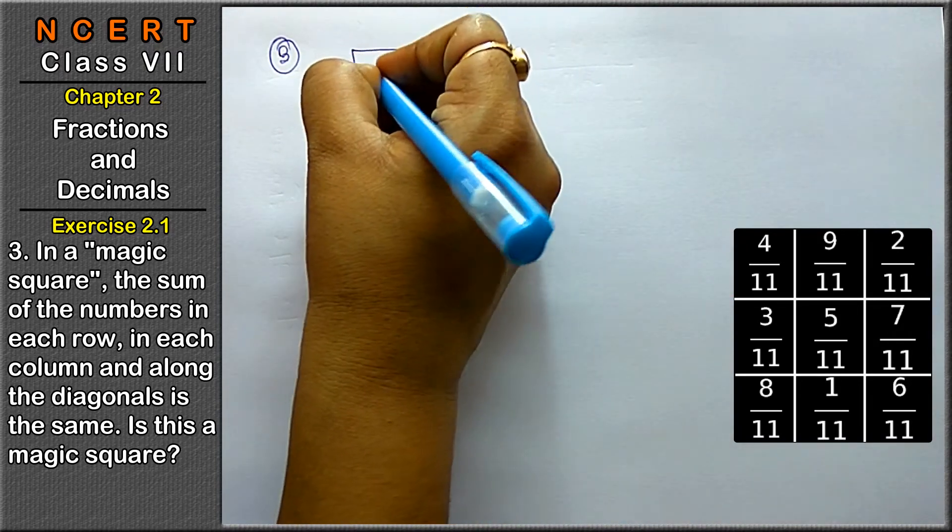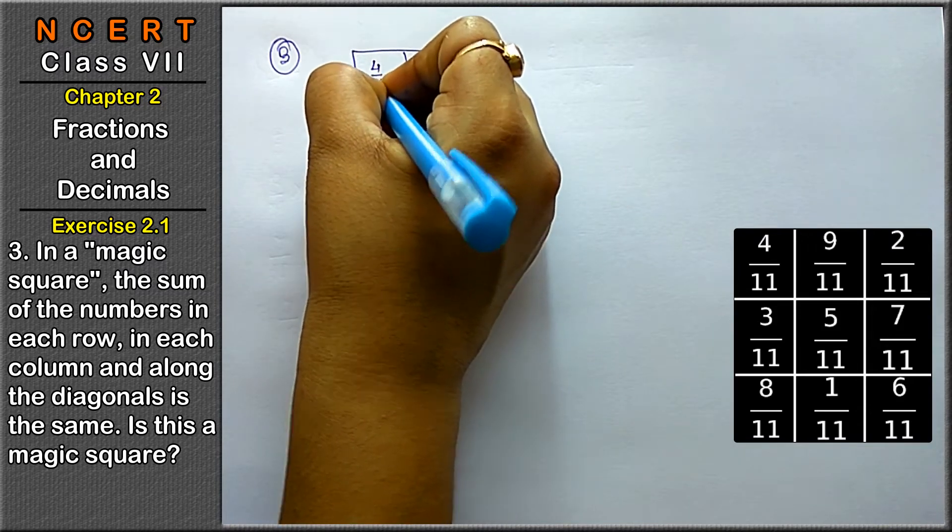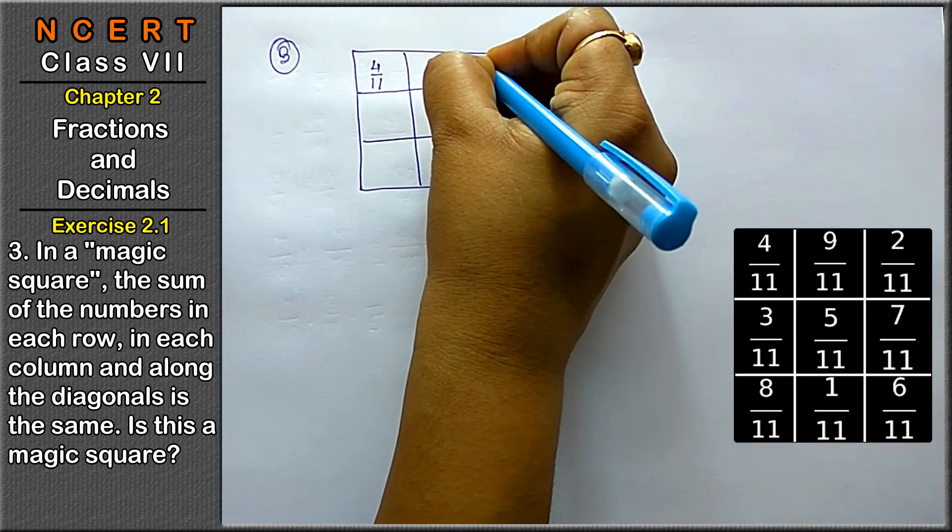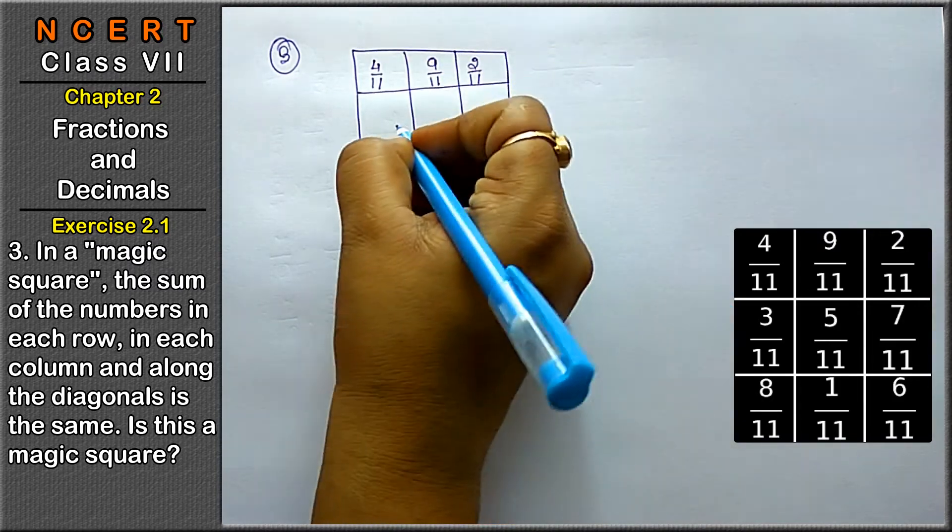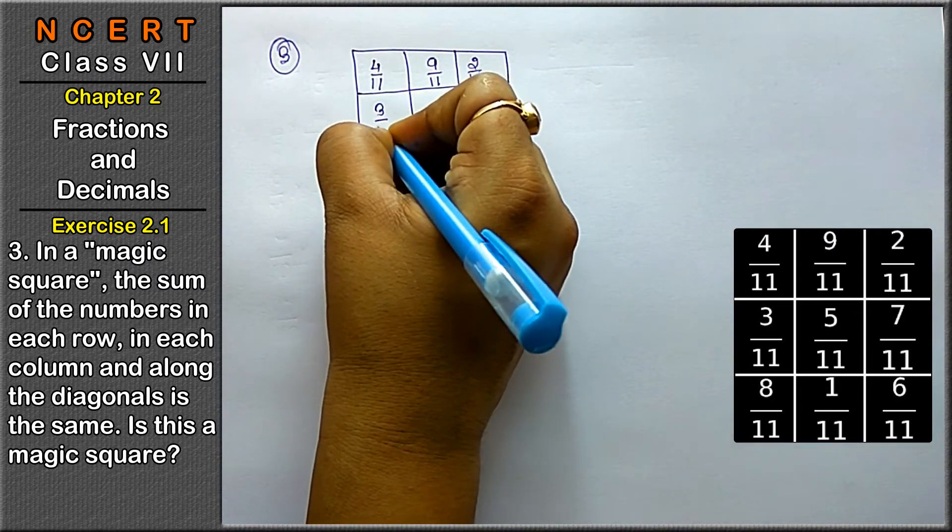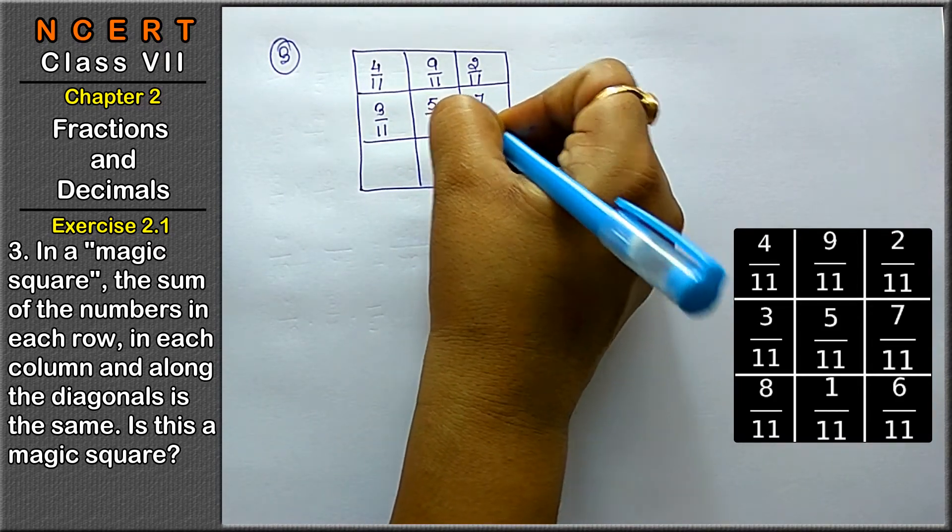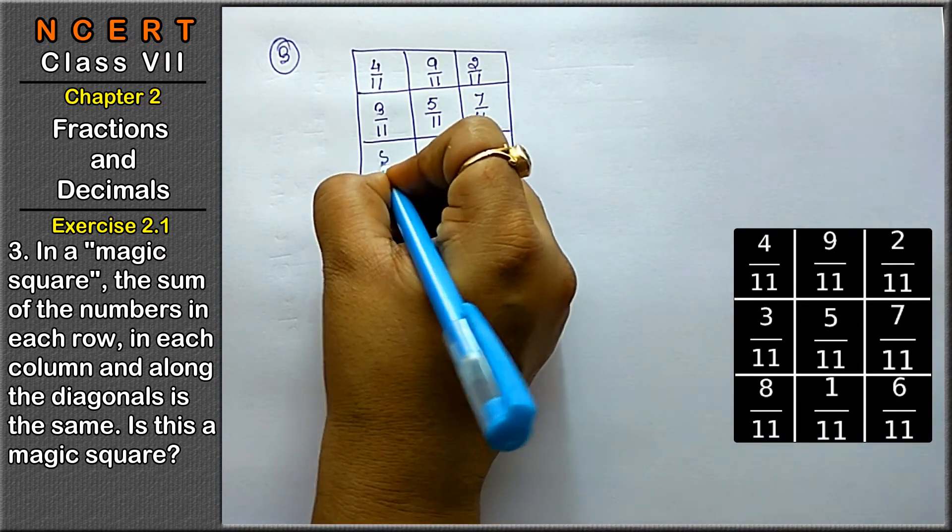First is 4 upon 11, next is 9 upon 11, next is 2 upon 11, next is 3 upon 11, then 5 upon 11, 7 upon 11, 8 upon 11, 1 upon 11, and 6 upon 11.